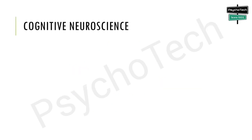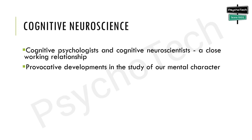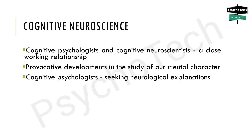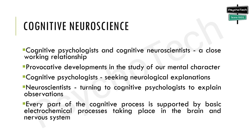Let us first start with cognitive neuroscience. It is interesting to know that only within the past few years cognitive psychologists and cognitive neuroscientists have formed a close working relationship, and this union has produced some of the most provocative and creative developments in the study of our mental character. Cognitive psychologists are seeking neurological explanations for their findings, and neuroscientists are turning to cognitive psychologists to explain observations made in their laboratories. Every part of the cognitive process, from sensation to memory, is supported by basic electrochemical processes taking place in the brain and nervous system.